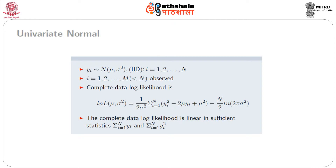Let us take an example to illustrate. Consider the univariate normal case where yi follows iid Normal(mu, sigma squared), i running from 1 to n, but suppose only m of them are observed, i equal to 1 to m where m is less than n. The complete data log likelihood is ln L(mu, sigma squared) = -1/(2 sigma squared) * sum from 1 to N of (yi squared - 2*mu*yi + mu squared) - n/2 * log(2*pi*sigma squared). Note that the log likelihood is linear in the sufficient statistics, which are summation of yi and summation of yi squared, for i running from 1 to n.